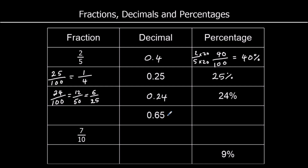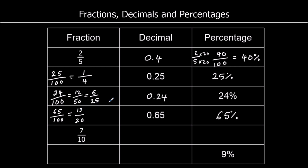0.65 is 65%. And it's 65 over 100. They're both in the 5 times table. How many 5s make 65? That's 13. So 13 over 20.